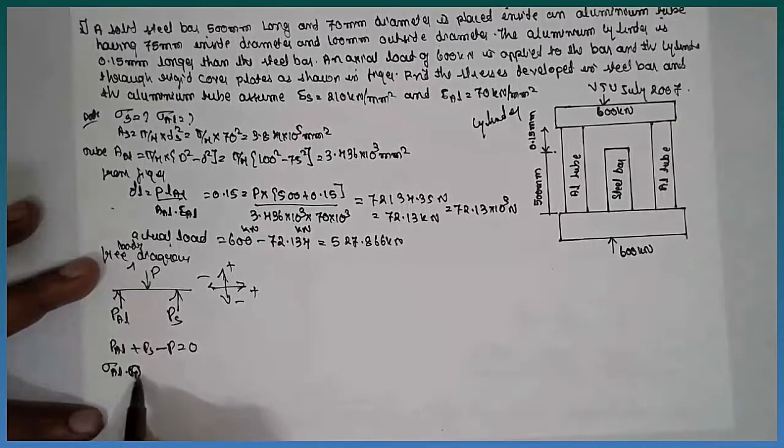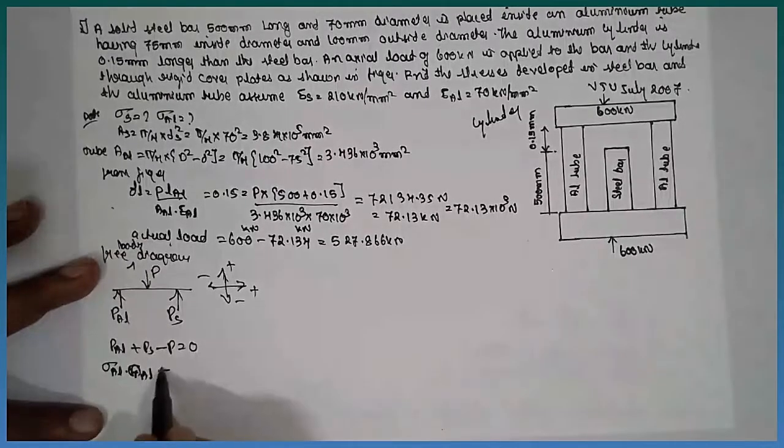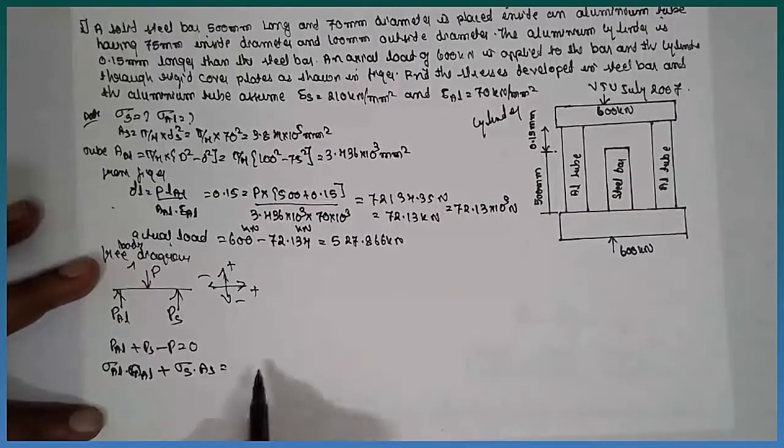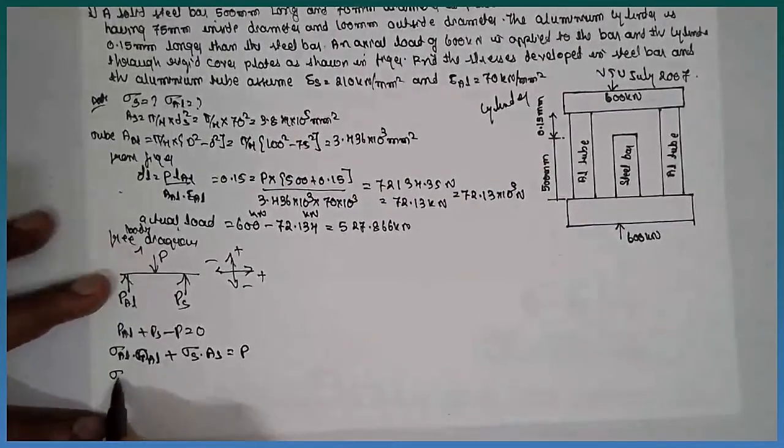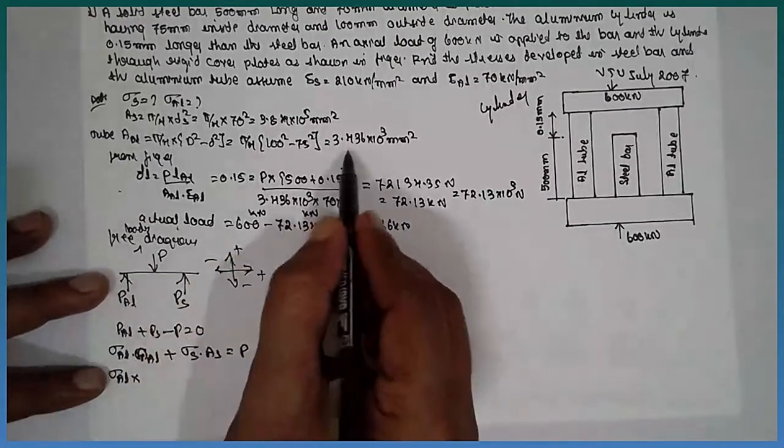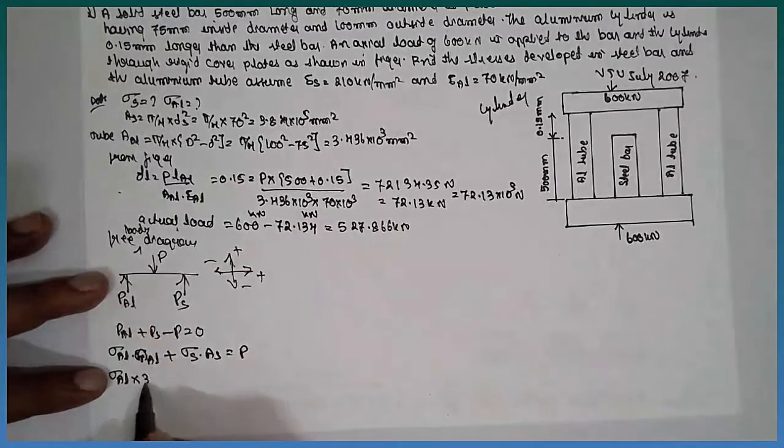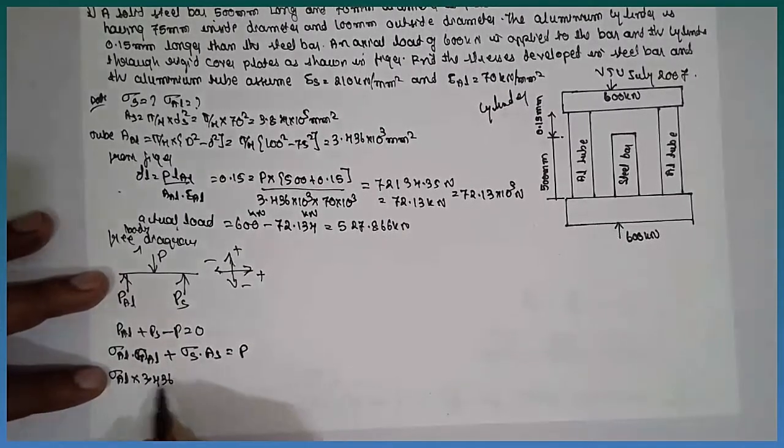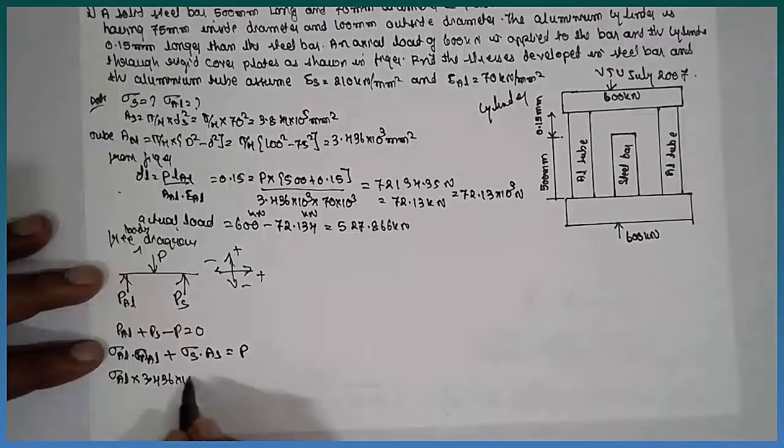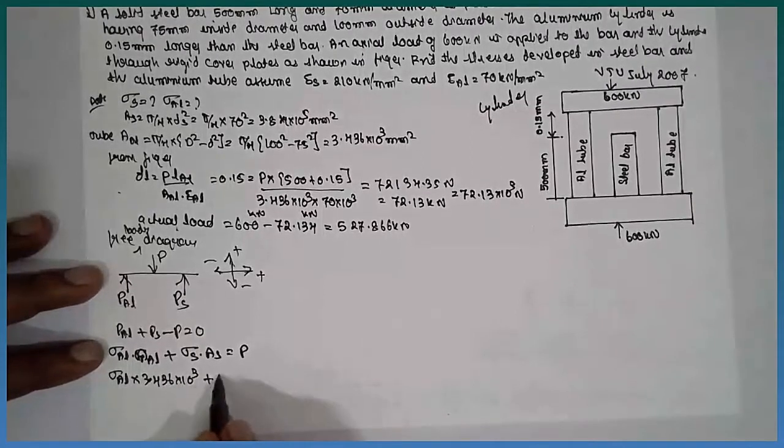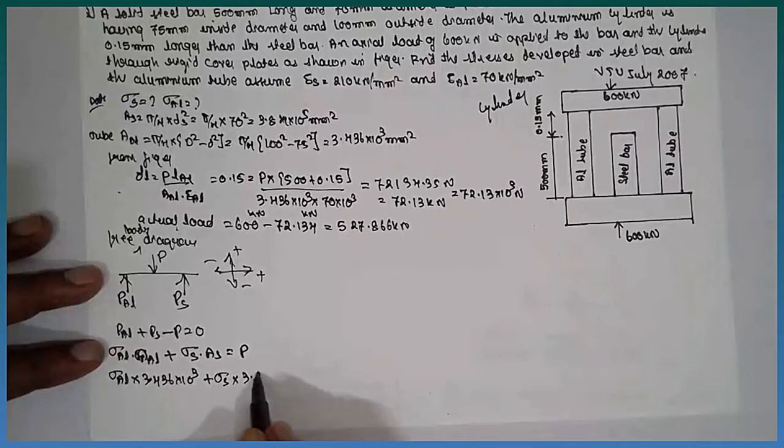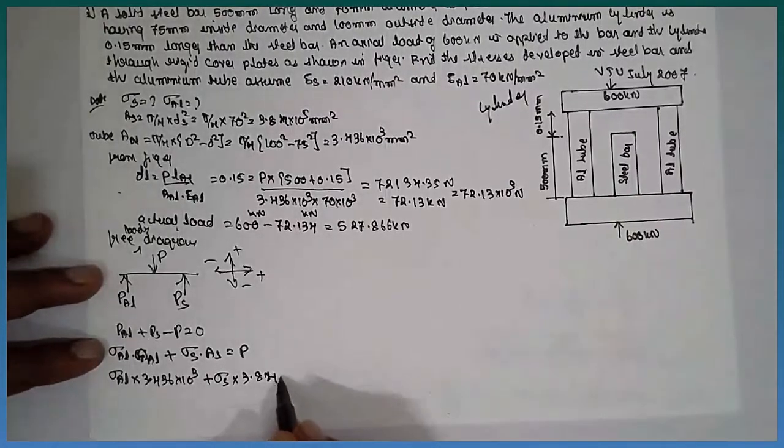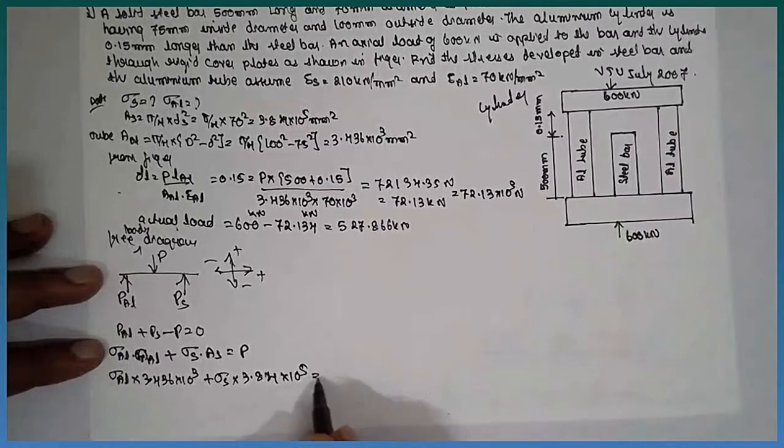Sigma AL times A AL plus sigma S times A S is equal to P. Sigma AL times A AL, 3.436 into 10 raise to 3 plus sigma S into A S, 3.84 into 10 raise to 5.